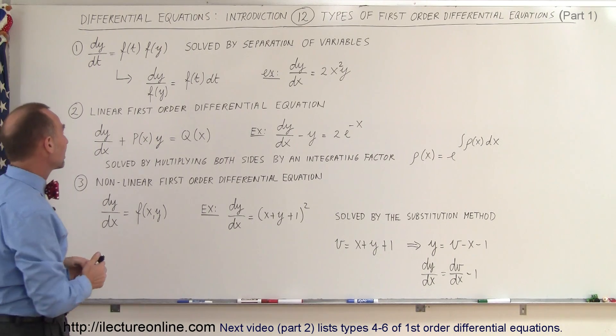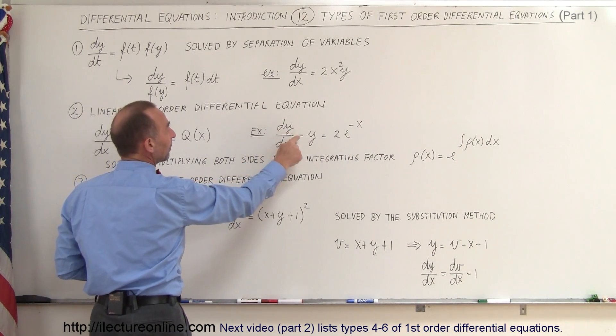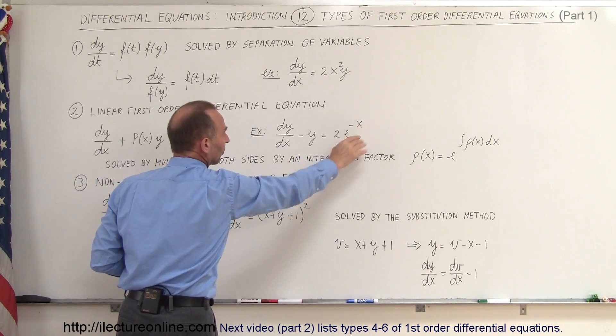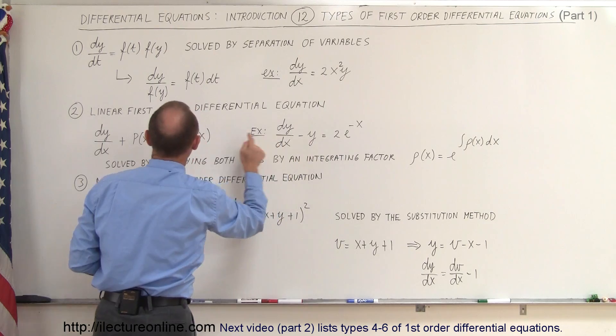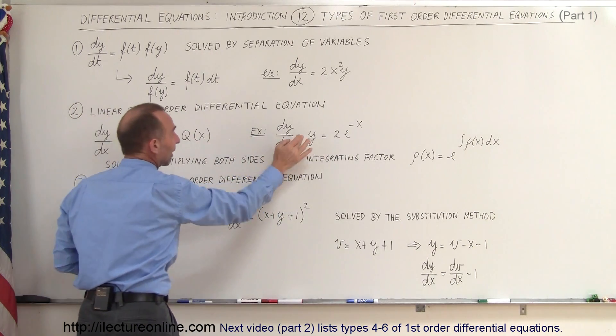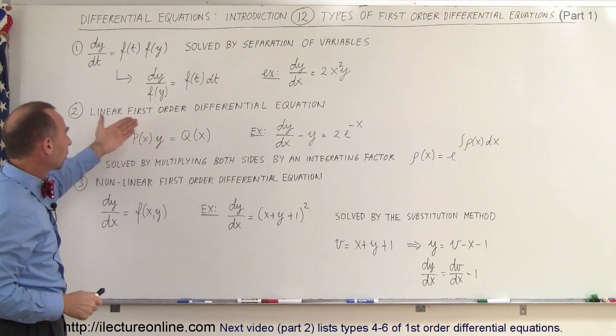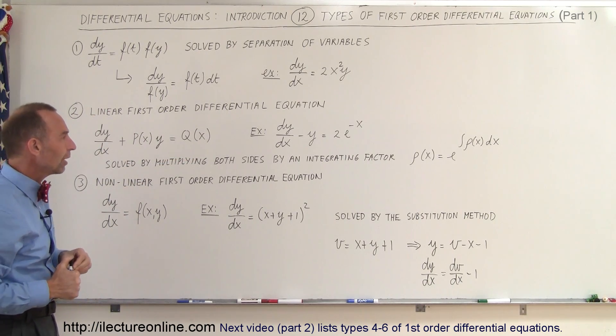An example of that is right here. So we have dy/dx, which is y prime, minus y equals 2e to the minus x. So some function of x on the right side. Here notice that the function of x on the left side multiplied times y is simply a negative 1. There's no x there. But that's still what we call a linear first order differential equation.